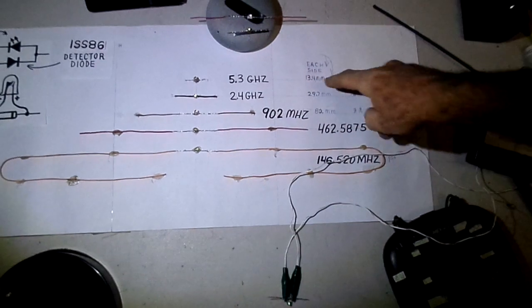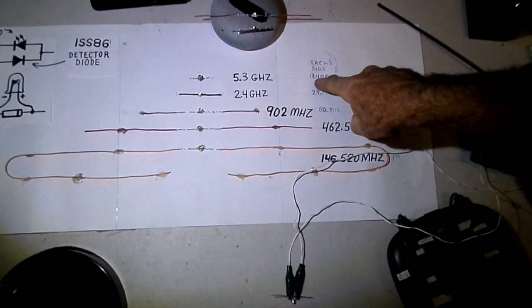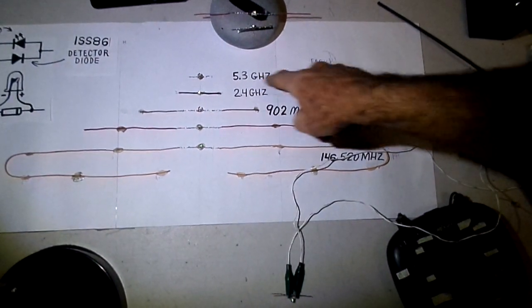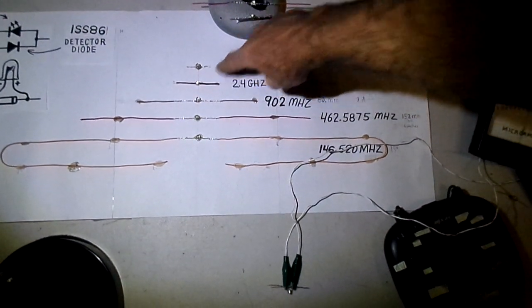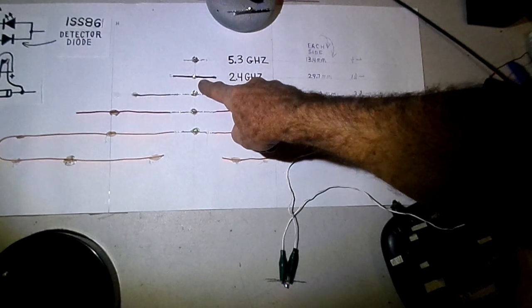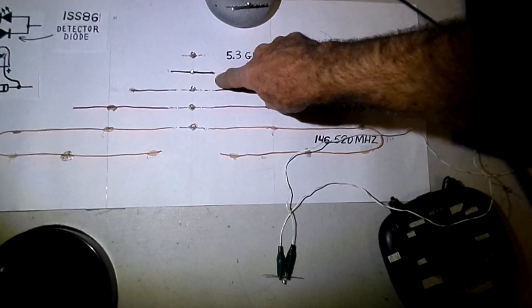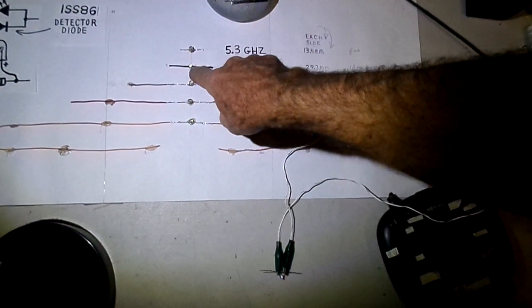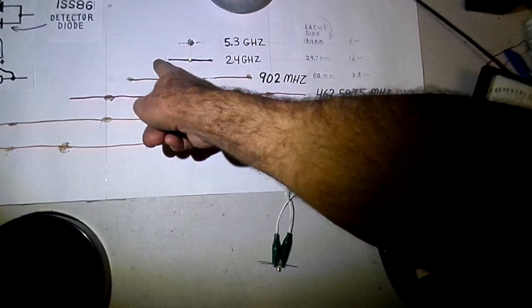The 5.3 GHz would have an element that's 13.4 millimeters on each side. That would be from the center of the LED to the side. This one here, I chose 29.7 millimeters from the center to the side. So, in other words, we got 29.7 from here to here and from here to here.